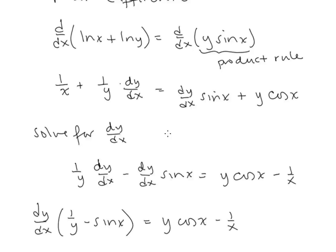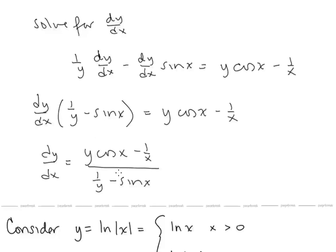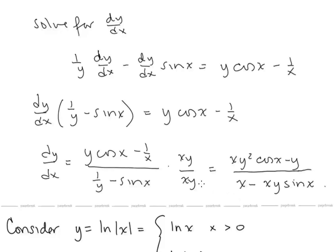Now we want to solve for dy/dx. We bring all our dy/dx terms to one side and everything else to the other side, factor out dy/dx, and then divide by the remaining factor. Notice that we have fractions within our fraction, so this isn't simplified yet. We need to multiply by x over x to clear one fraction and by y over y to clear the other. So we multiply by xy over xy and this gives us our simplified solution for dy/dx.